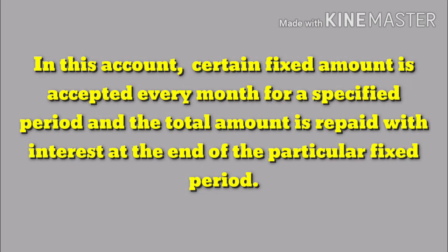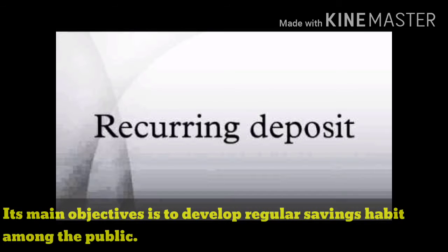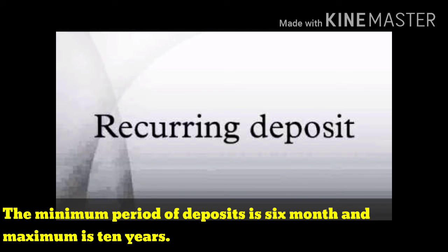In this account, a fixed amount is accepted every month by the bank. The total amount along with interest is repaid at the end of a particular fixed period. Its main objective is to develop regular saving habits among the public. The minimum period of a recurring deposit account is six months and the maximum period is ten years.